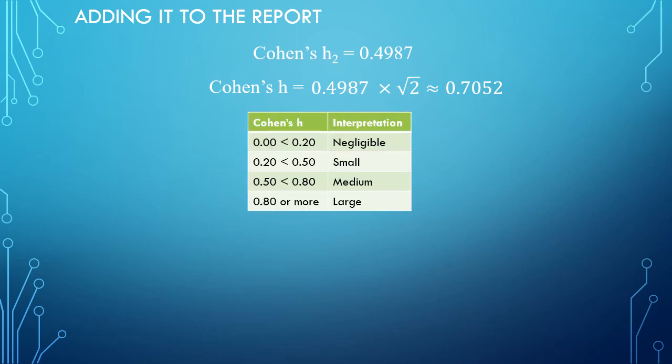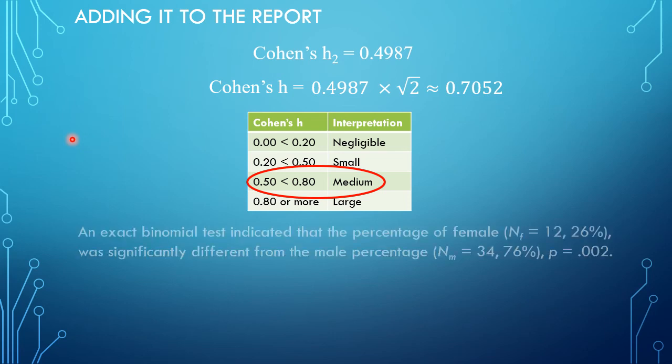Then I can look that up in the table. In this case, that will fall somewhere between 0.5 and 0.8, so it can be classified as medium. So I could add that to the result.